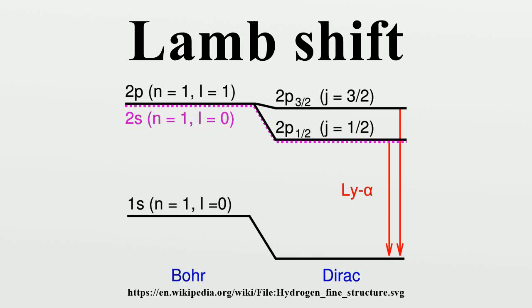In physics, the Lamb shift, named after Willis Lamb, is a small difference in energy between two energy levels 2s₁/₂ and 2p₁/₂ of the hydrogen atom in quantum electrodynamics.